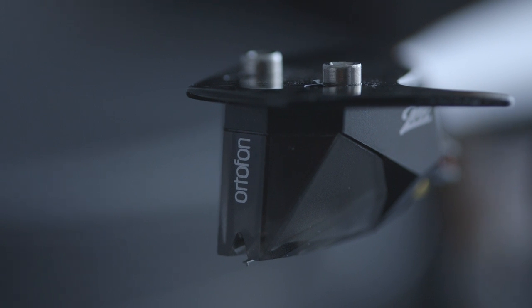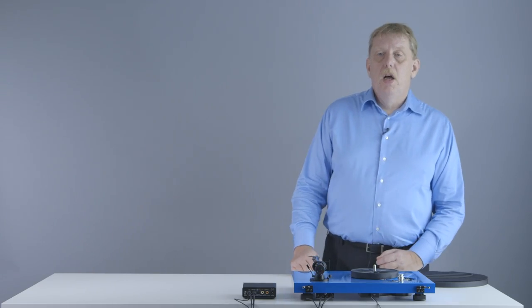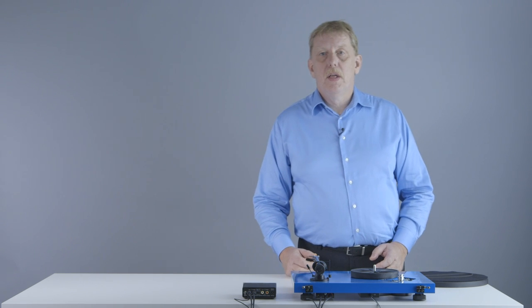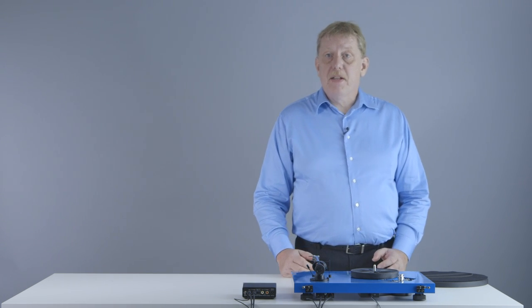But award winning models like the OM5E, 2M Red, and 2M Silver. Which is actually specially designed by Ortofon for Project. All these cartridges are already correctly installed and aligned on your turntable in the factory.